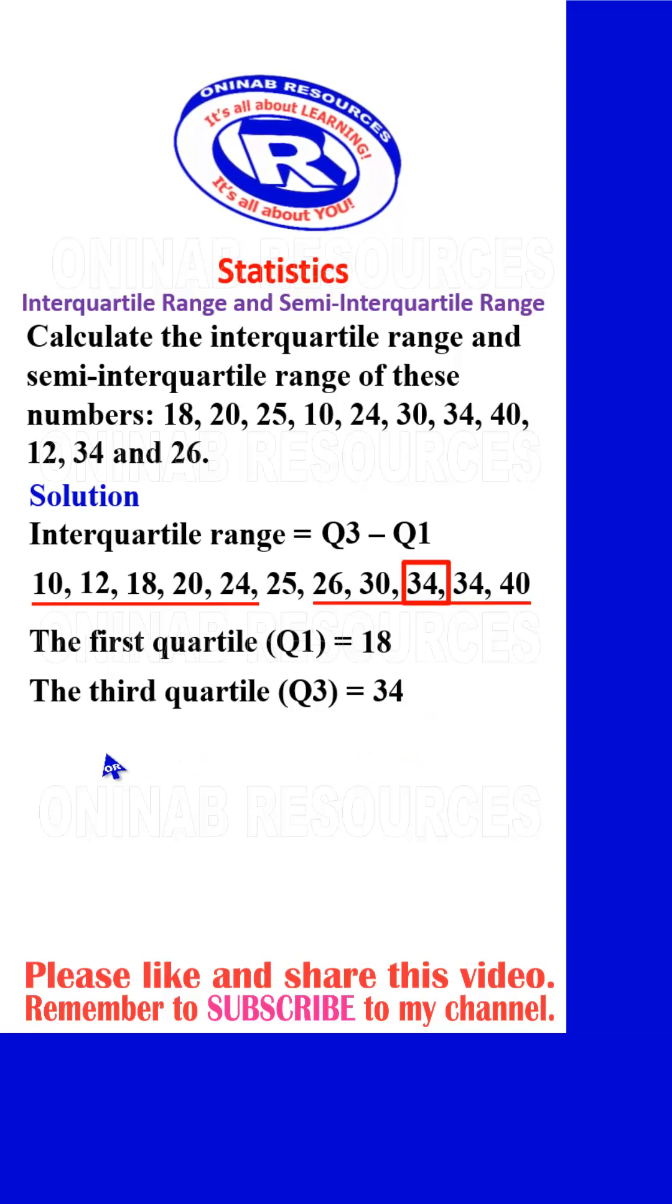So having gotten the Q3 and Q1, we go ahead to calculate our interquartile range. We set Q3 minus Q1. Our Q3 is 34, our Q1 is 18, so we have 34 minus 18, giving us 16.